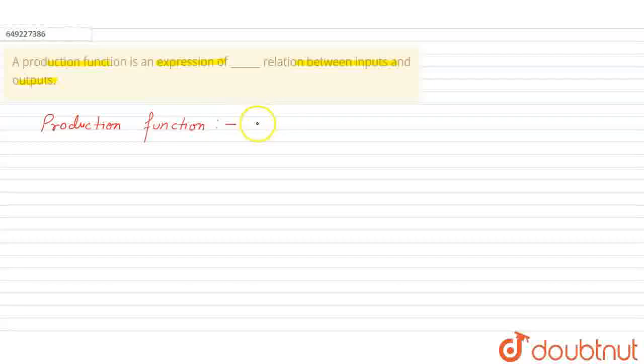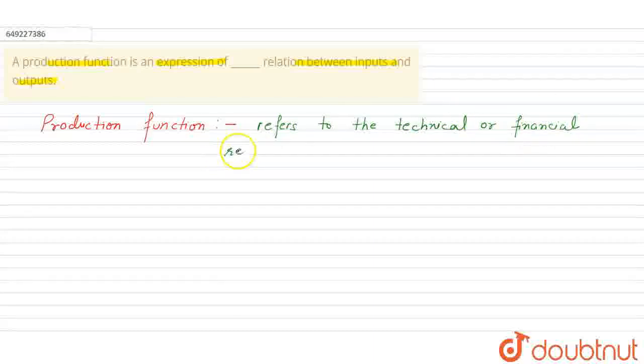So we can write it here like this. It refers to the technical or financial relation between inputs and outputs in an economy.